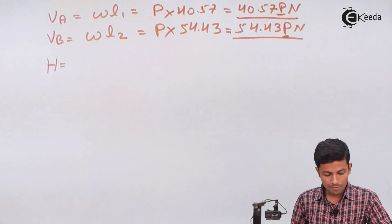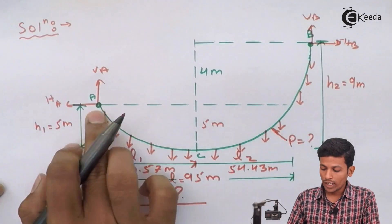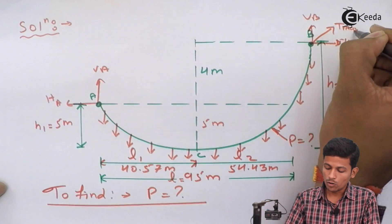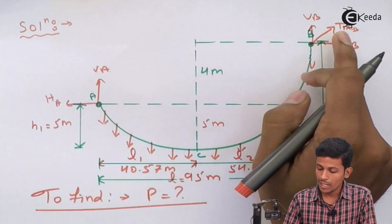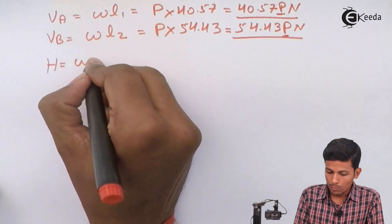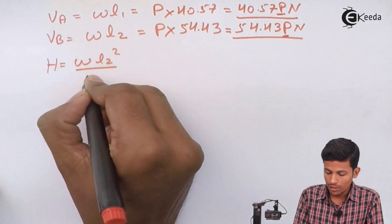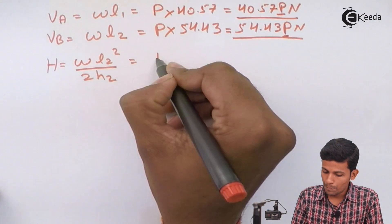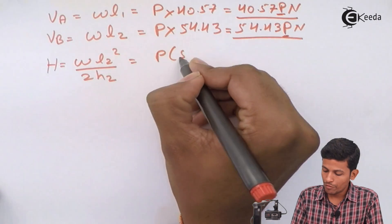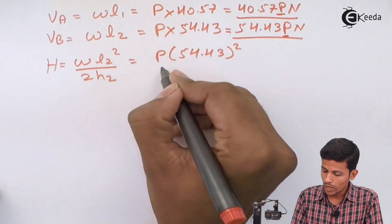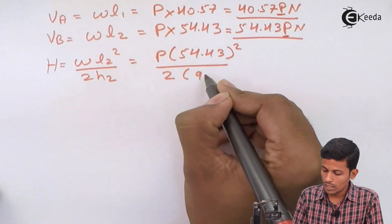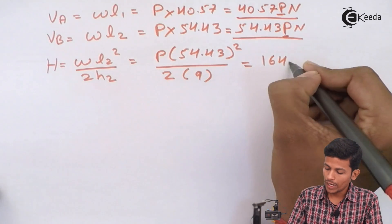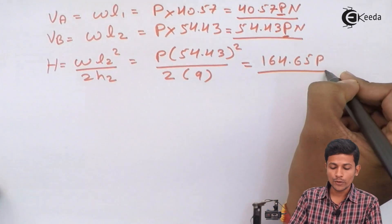Now for the horizontal tension H. Since the right support is higher, T_max occurs at the right support B side. The formula is H = W × L2² / (2 × H2) = P × 54.43² / (2 × 9). Solving this gives H = 164.65P.